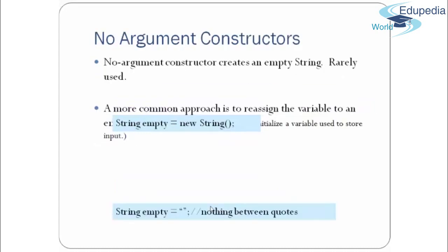The no-argument constructor creates an empty string and is rarely used. A more common approach is to reassign a variable to it. For example, String empty = new String() — here no value is passed, so it creates an empty string. Essentially you are calling the no-argument constructor of the String class.